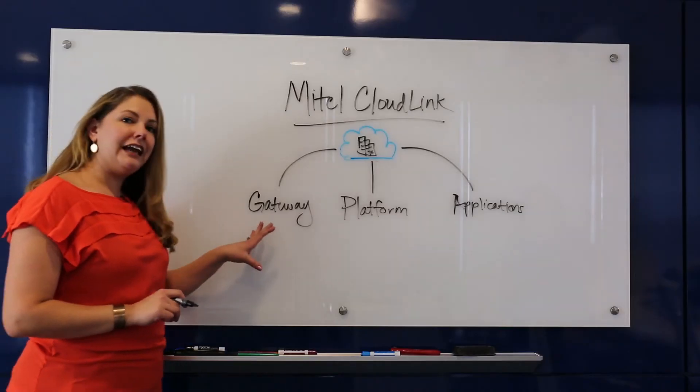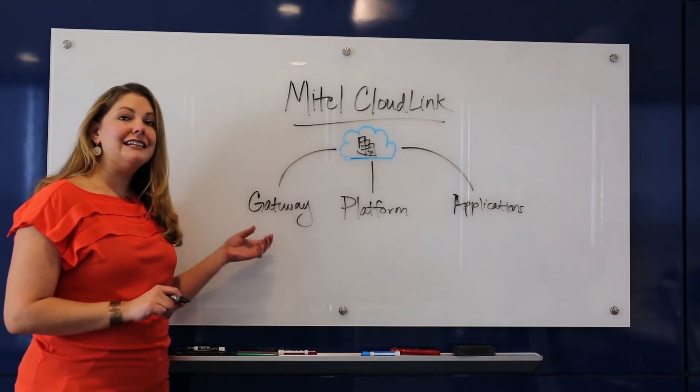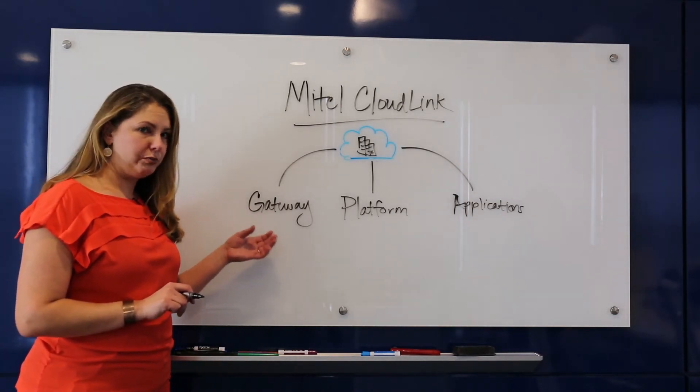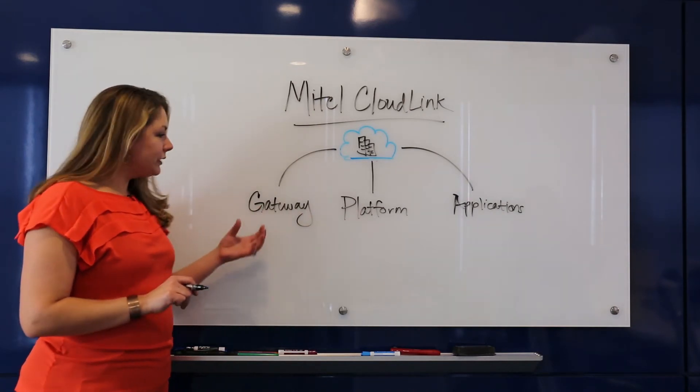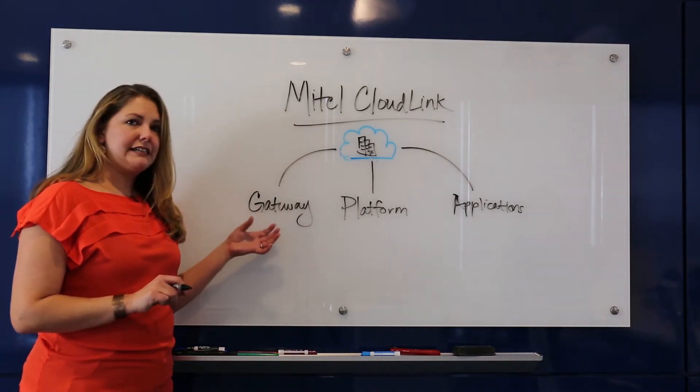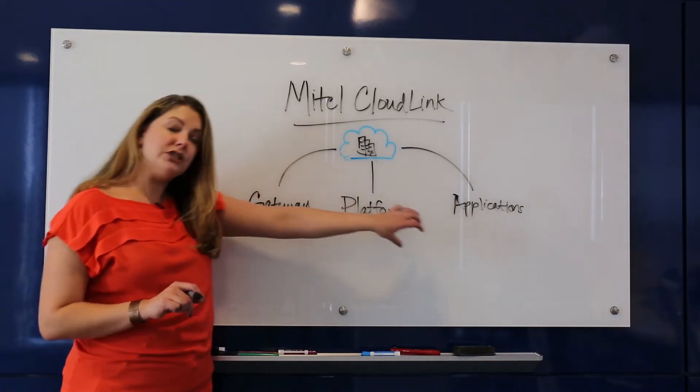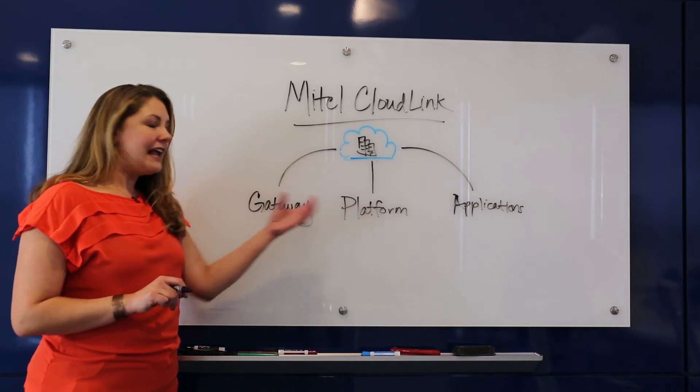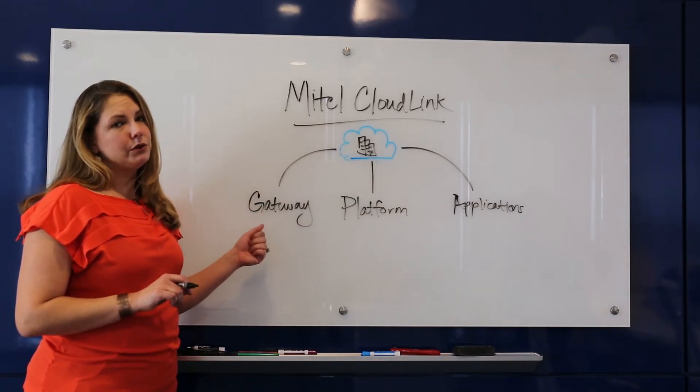The CloudLink gateway is our enablement technology. It's the core technology that connects our on-site call control platforms to our open cloud platform. It's the bridge that gives customers access to our next generation applications, which live on our platform. It's very simple, secure, and very affordable to deploy.